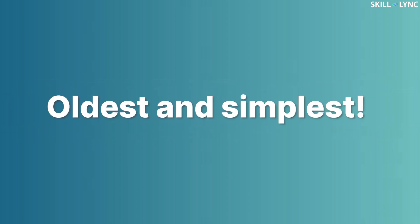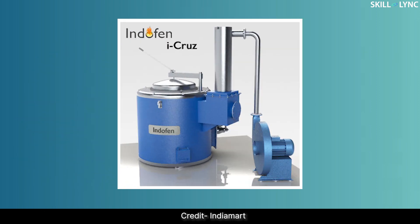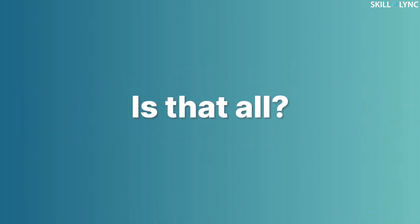The crucible furnace is one of the oldest and simplest furnaces used in the foundry. It consists of a refractory crucible in which the metal charge is placed. The crucible is heated through conduction via its walls using fuels such as commercial gases, fuel oil, fossil fuels, or electricity. As the crucible temperature rises, the metal charge melts and molten metal is obtained. This furnace is used when small quantities of molten metal with a low melting point are required.